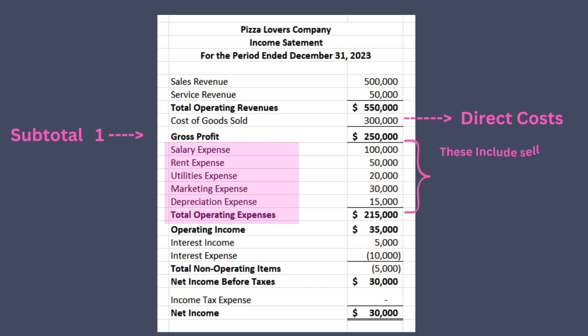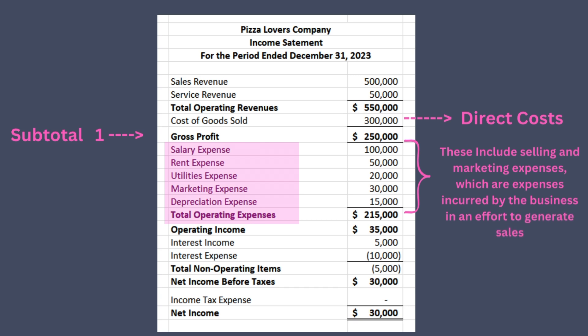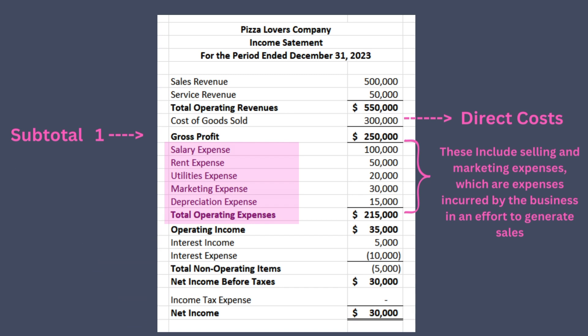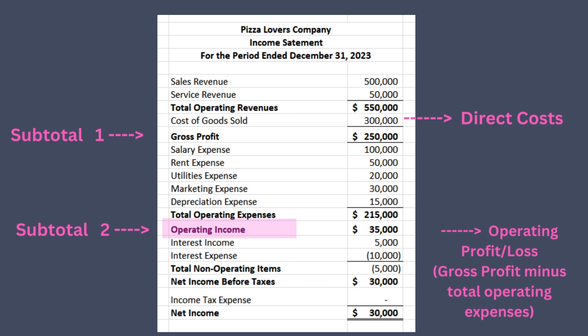Next you will list your operating expenses. This includes selling and marketing expenses — costs incurred in an effort to generate sales — as well as general and administrative expenses, which are costs related to day-to-day operations such as personnel, accounting and finance, and the operating costs of the company's headquarters. These operating expenses are also called overhead costs or indirect costs. We then calculate the subtotal operating profit or loss by deducting total operating expenses from the gross profit subtotal, representing income from core business operations.